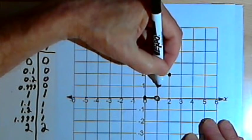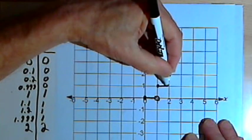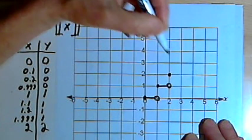So that means I'm going to have another horizontal line from 1 over to 2, but not including the 2.